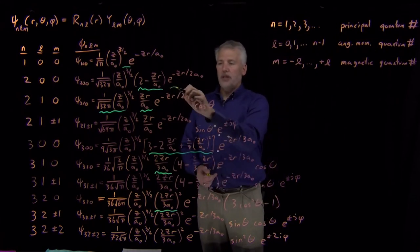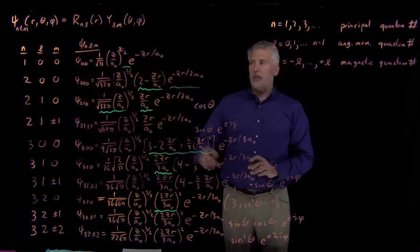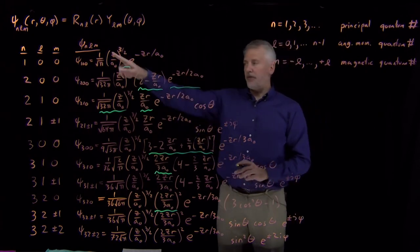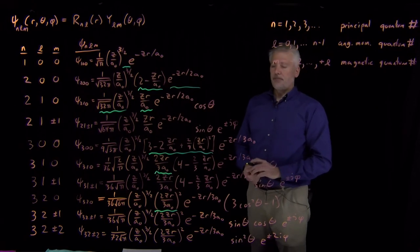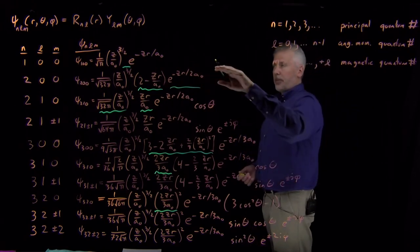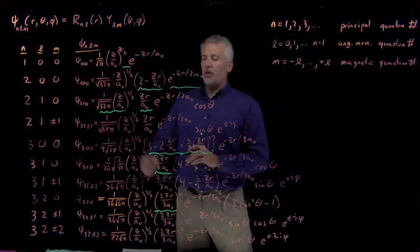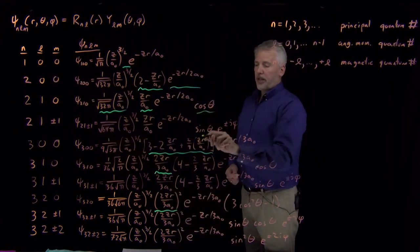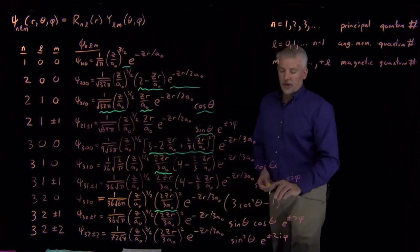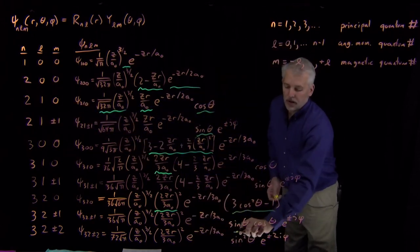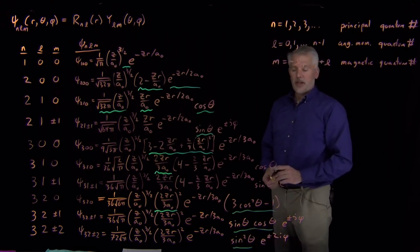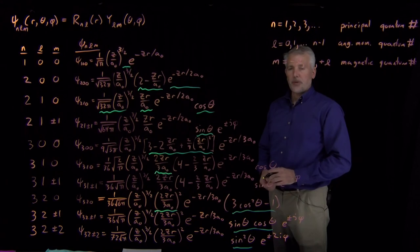There's also always this exponential piece, e to the minus z r over one, or two, or three a nought, depending on the value of n for this particular wave function. And then comes the angular terms. So we might have no angular dependence at all when l equals zero. We might have a cosine theta or a sine theta when l is equal to one. Or when l equals two, we might have some second-order polynomial in cosine theta that are somewhat familiar to us from when we studied the rigid rotor.